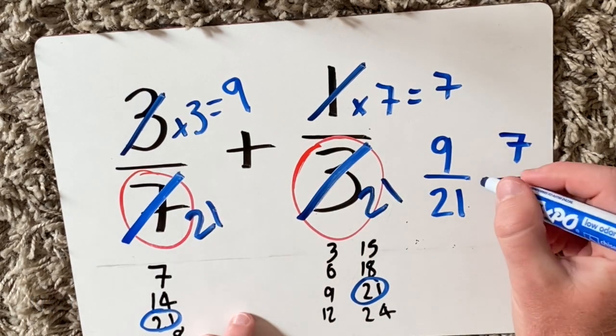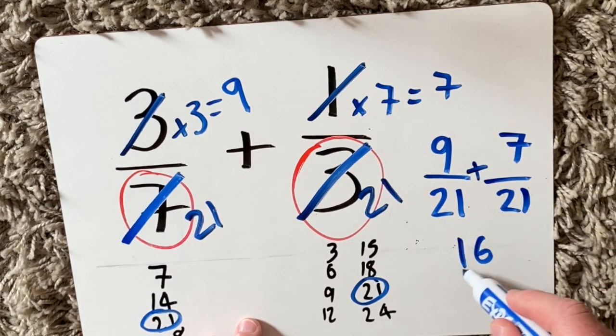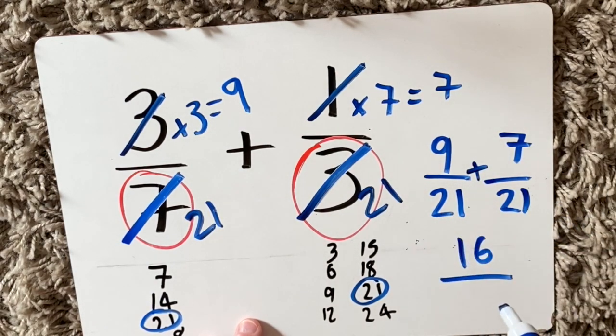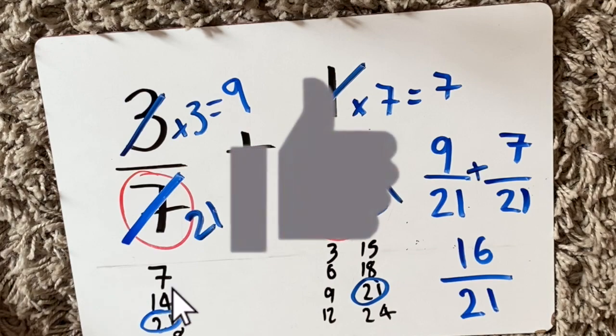All I do now is add these together. Nine add seven is sixteen. And then twenty-one and twenty-one, we know that just stays the same. You never add the denominators together.